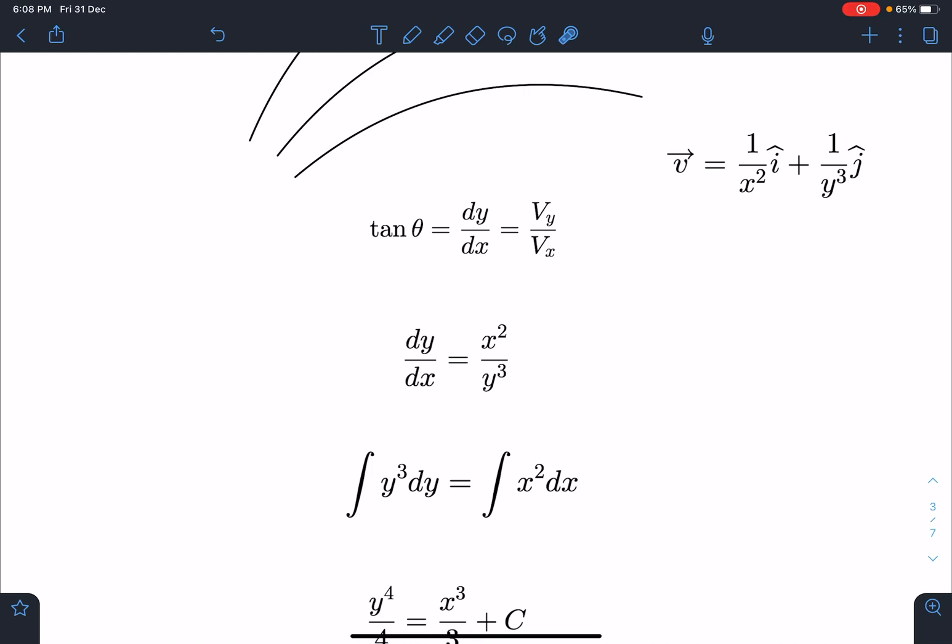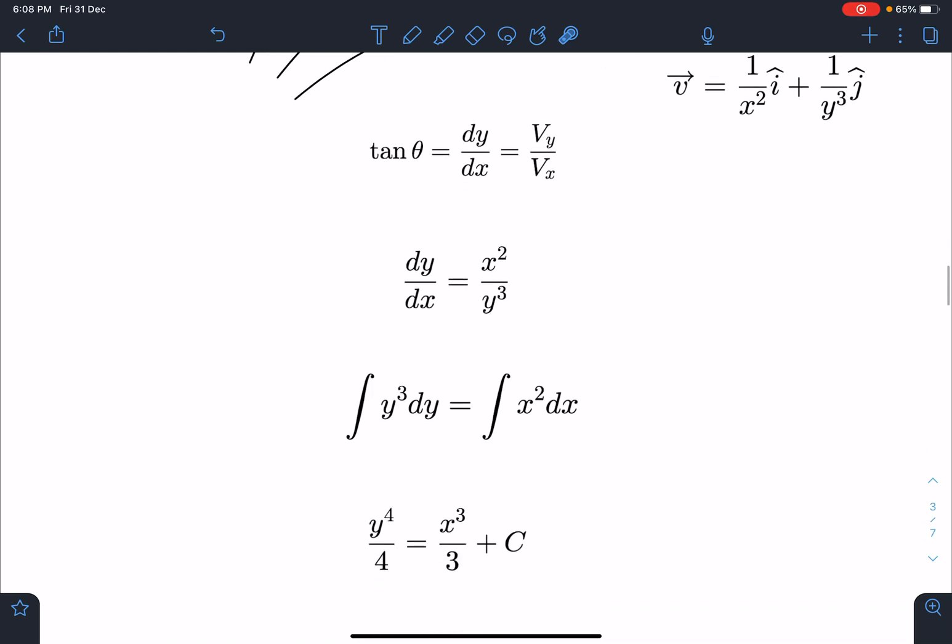y³dy equals x²dx. When we integrate, we will be getting y⁴/4 equals x³/3 plus some unknown constant C. Now that's where we are going to use the data.